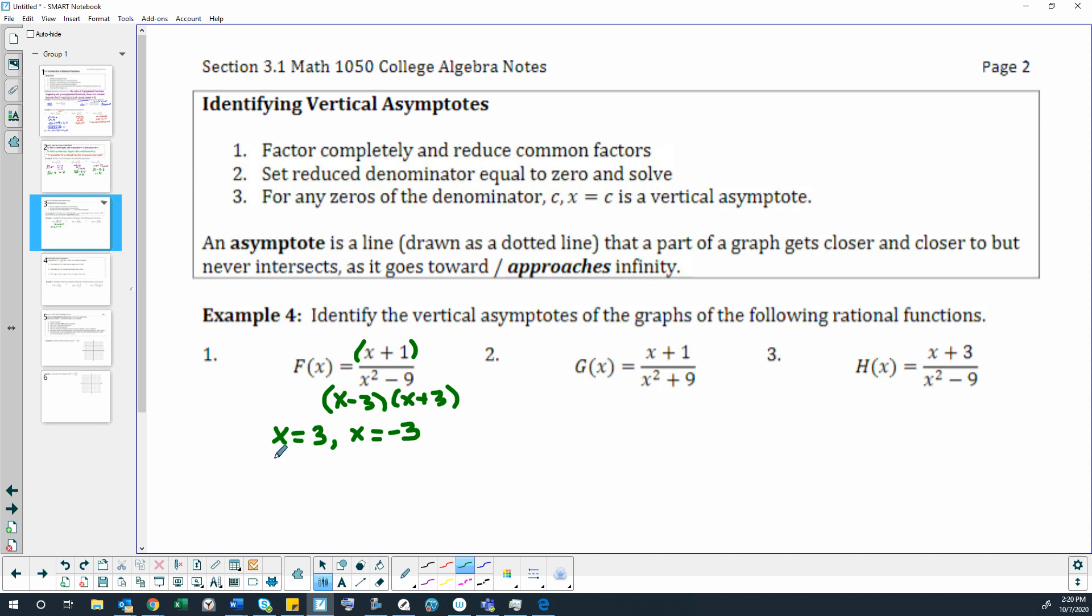From example 2, we have the same answers. Only in example 2, we were finding domain and we said that x could not equal those numbers. Now we're saying x does equal those numbers and that's because these are the vertical asymptotes. It's where the asymptotes go and where the graph does not exist. So the vertical asymptotes and the domain are indeed very closely related.